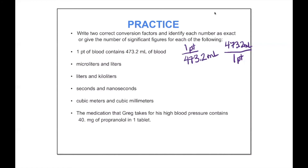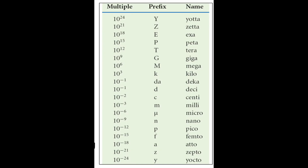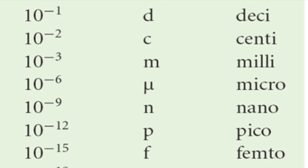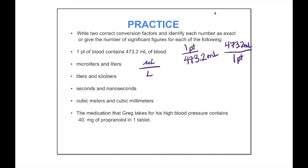If we look at the difference between microliters and liters, as soon as we see it's a metric system conversion, we go back to the table to figure out the exact conversion. The way we read the table is: for every one microliter, you go to the left column and find 10 to the negative 6 meters. So for one microliter, we have 10 to the negative 6 liters. These are ones we'll ultimately need to memorize. Written the other way: for every 10 to the negative 6 liters, we have one microliter.